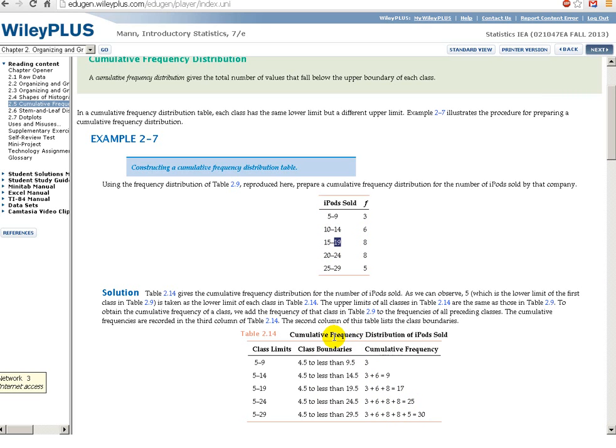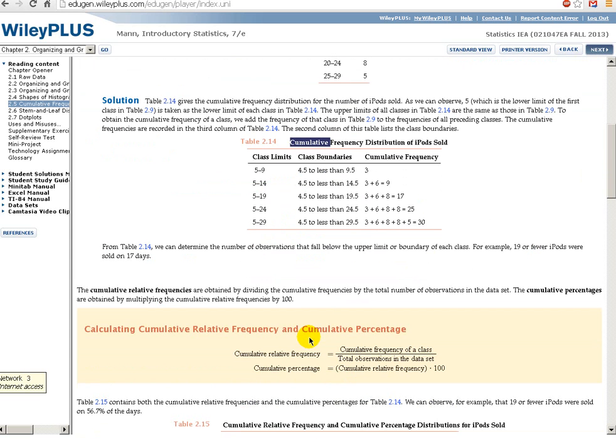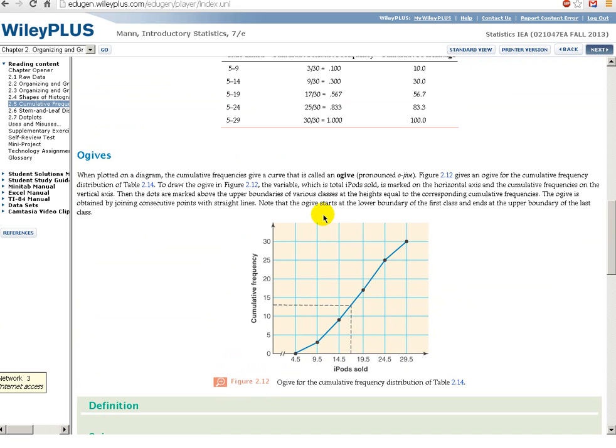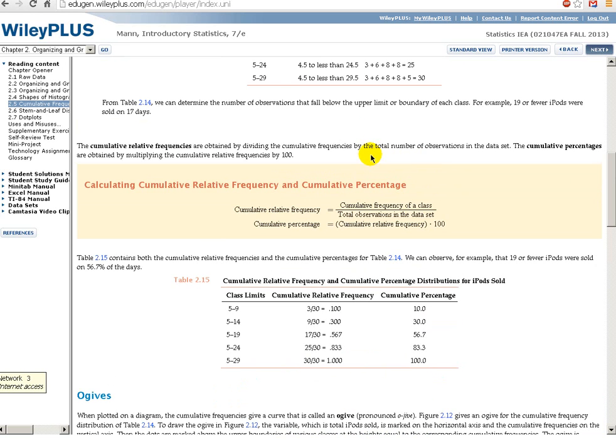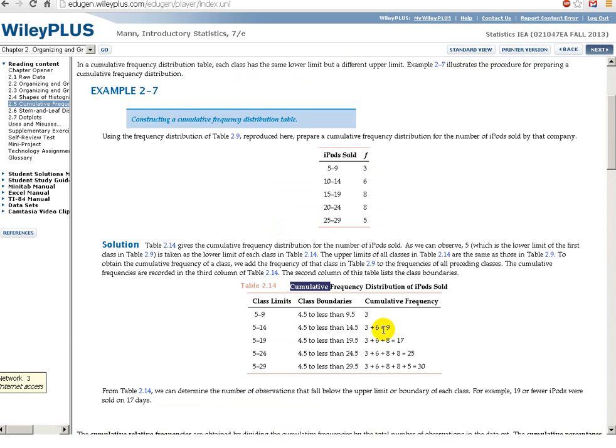This is called the cumulative frequency distribution of iPod sold, so it's the cumulative one. Now, how do we graph this? We graph it like this. When we go from 4.5, so at 4.5 there was still 0, but when we get to 9.5 the total sold is 3. When we get to 14.5, it goes up to 9.